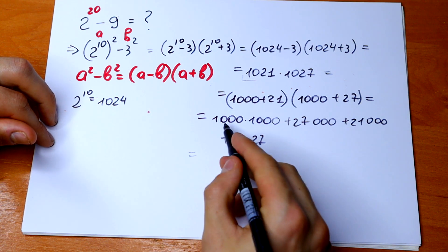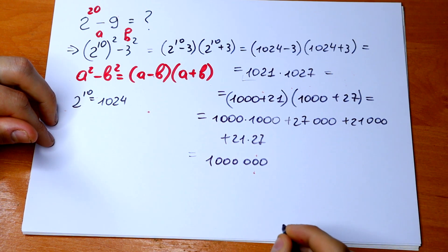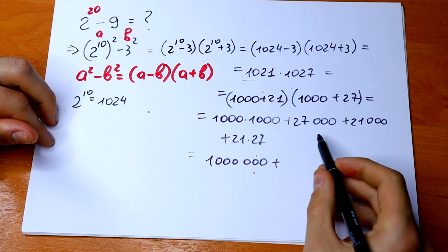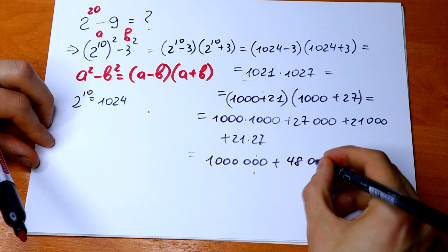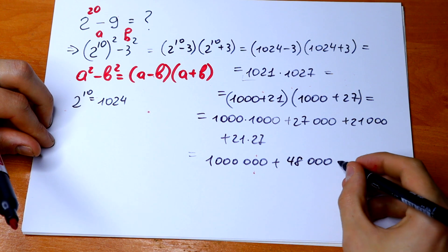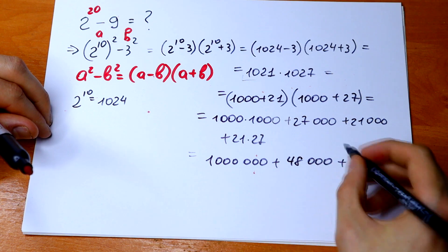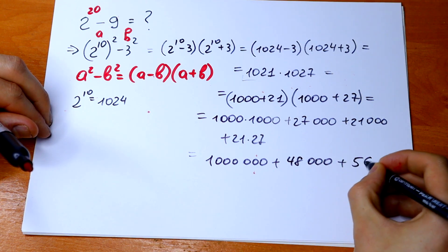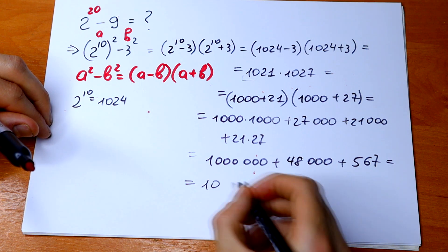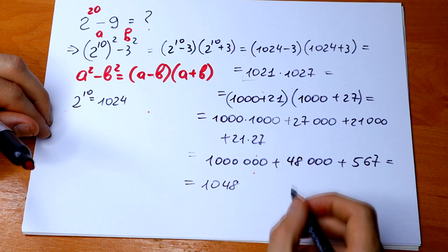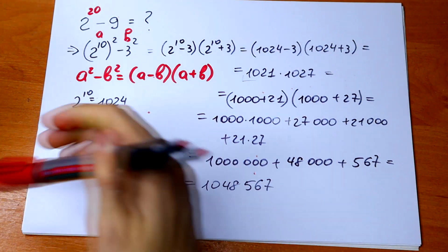OK, this will be equal to 1,000,000 plus 27,000 plus 21,000, which is 48,000, and plus this product, 21 times 27, which will equal 567. And let's add all this. We will have 1,048,567, and this is the answer.